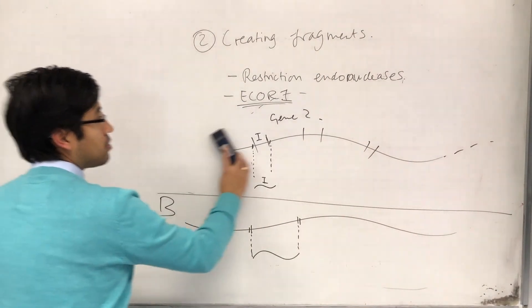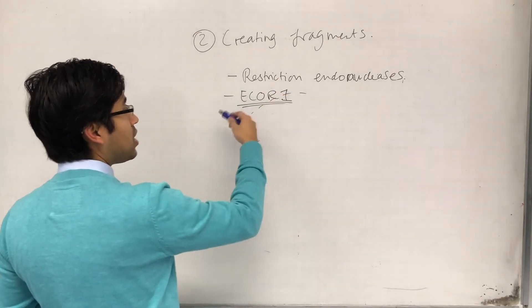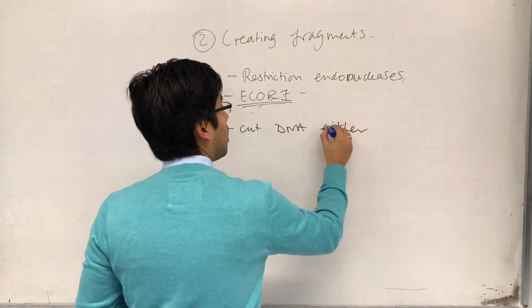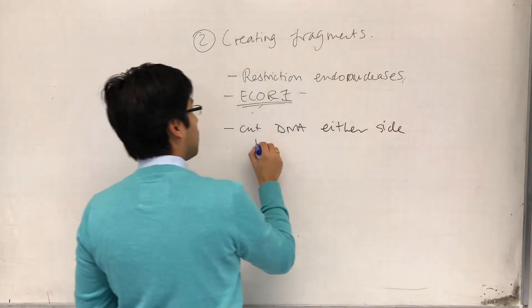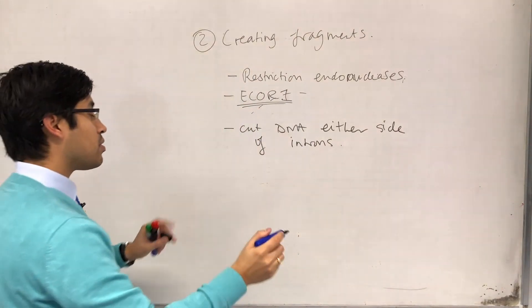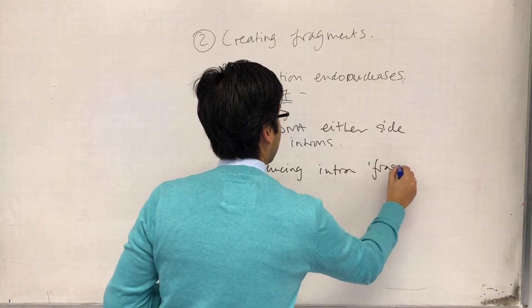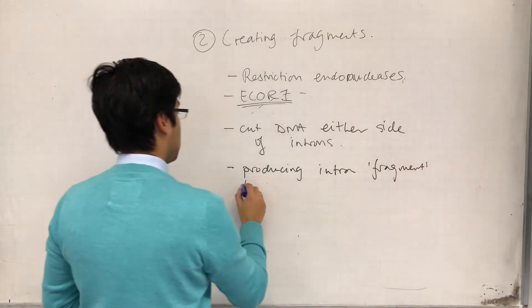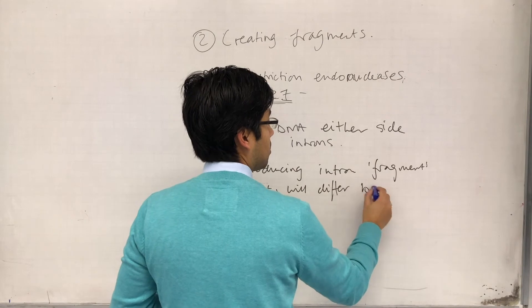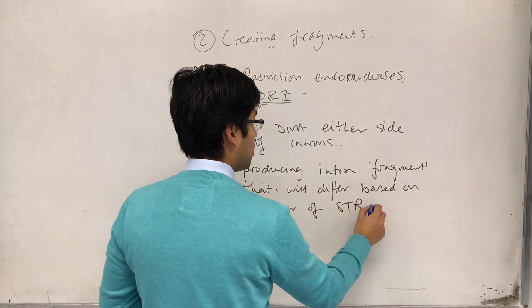I guess the basic point here is that restriction endonucleases such as ECOR1 are used to cut DNA on either side of particular introns, producing intron fragments.